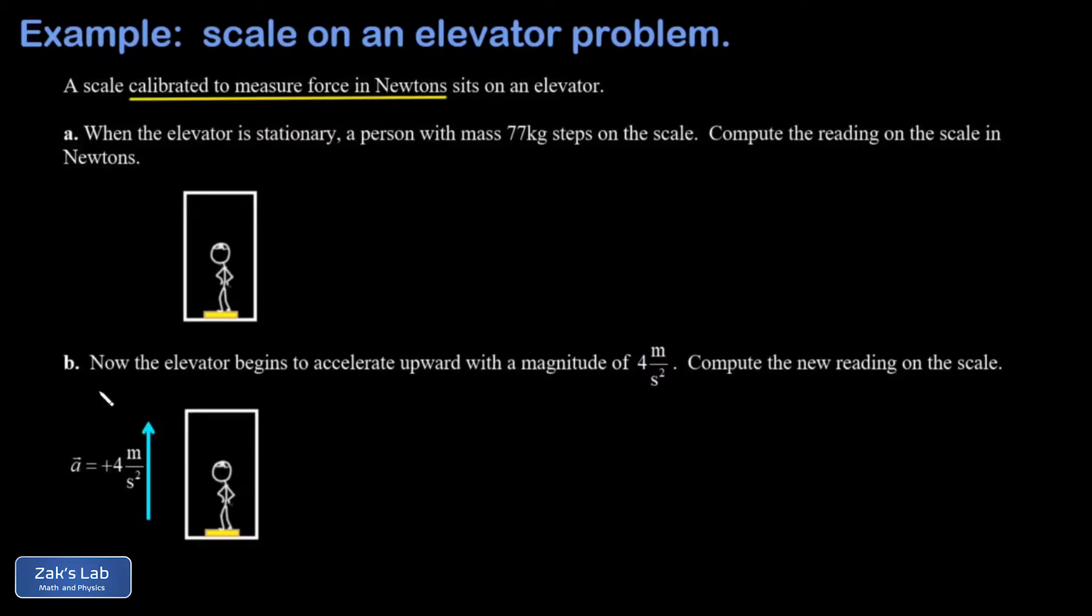turn on an upward acceleration in this elevator. So in part a I'm told this person has a mass of 77 kilograms and they just stand on the scale. I want to get the reading on the scale in newtons, and there's a key conceptual point about the reading on the scale. I can say certainly that the scale